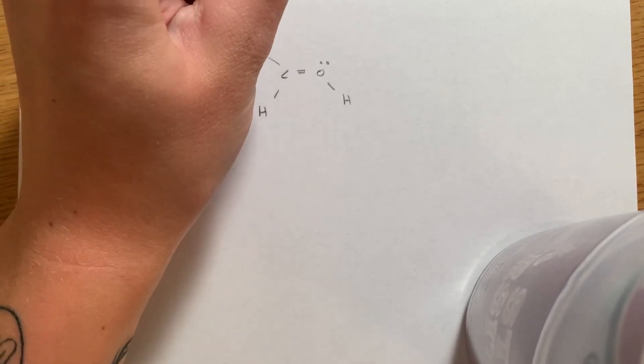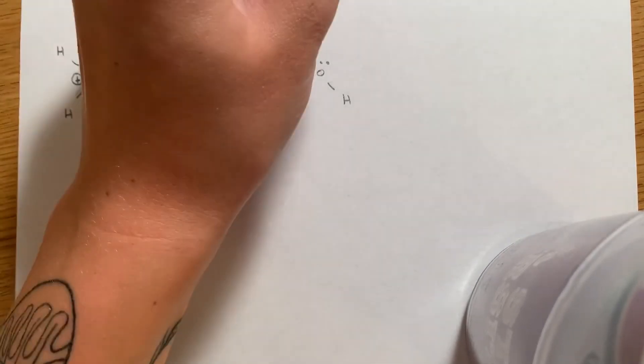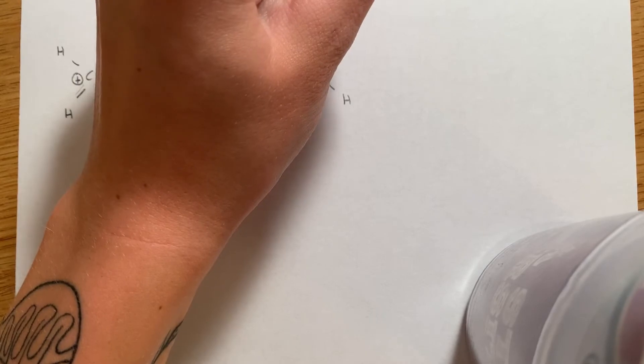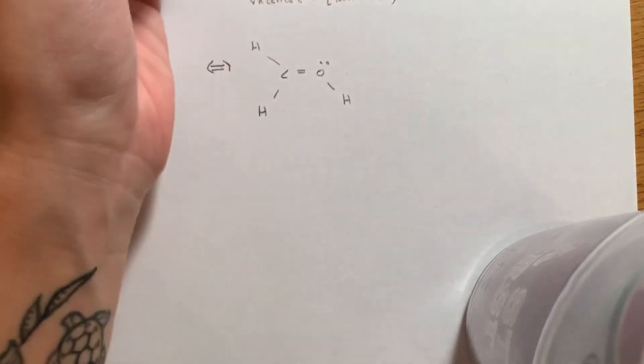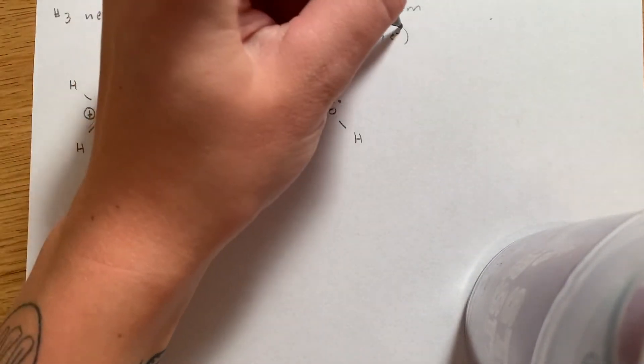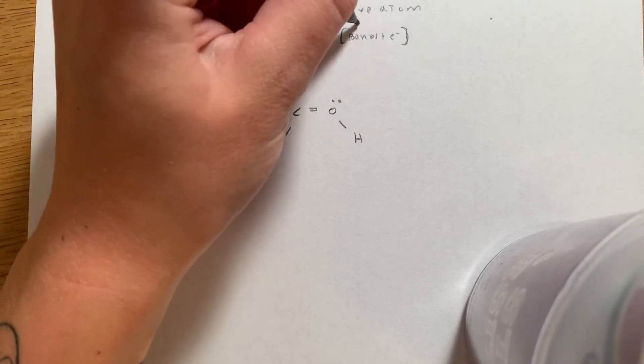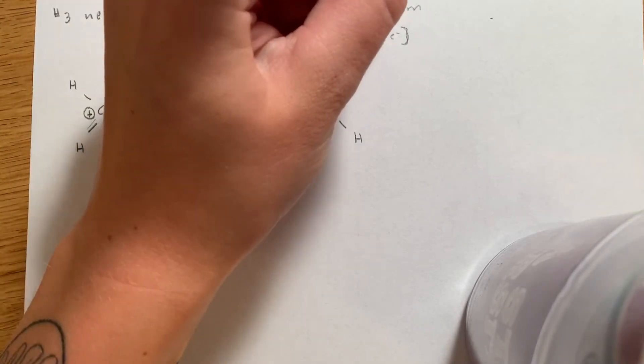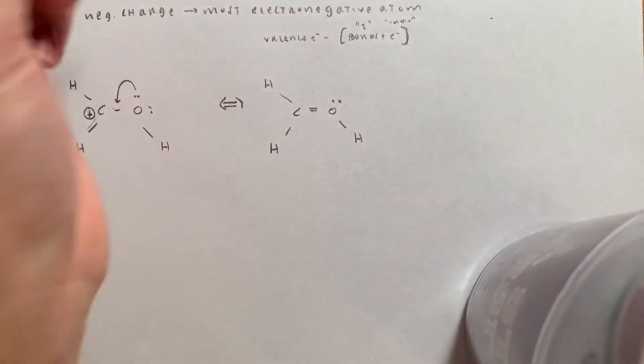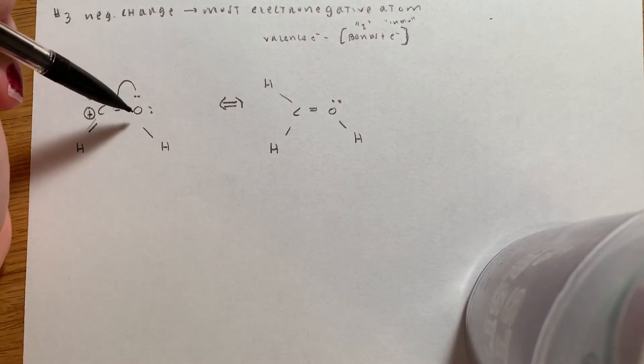So let's check our carbon. Remember that it's valence electrons minus bonds plus electrons. Bonds are counted as one. You count the electrons individually. So this carbon, or let's just do this with oxygen.